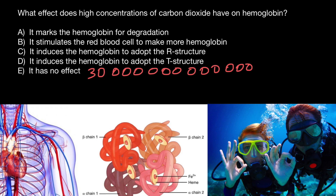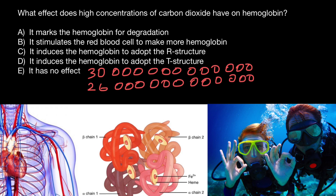Do you know how many red blood cells are in our organism? The number is 26 trillion — 26 followed by twelve zeros. So 26 trillion of our cells are red blood cells.